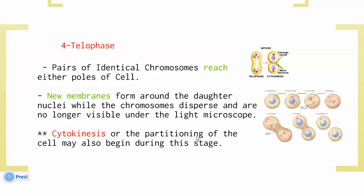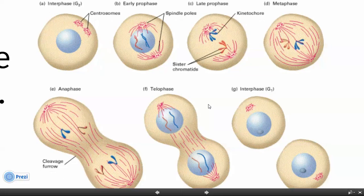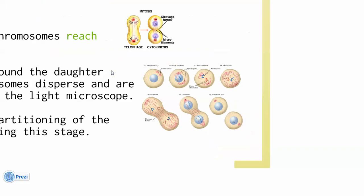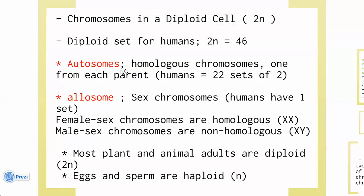Cytokinesis — the physical division of the cell — may also begin during the telophase stage. Before talking about meiosis, we need to know some information about chromosomes. Chromosomes in a diploid cell — diploid means 2N. For humans, 2N equals 46 chromosomes. We have autosomes and allosomes.